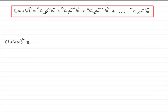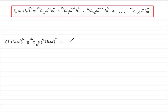What we've got is 6C0, a to the power n — a is 1, so that's 1 to the power 6 — and b to the power 0, b is kx, so put kx all to the power 0. Make sure you write these terms in brackets, especially the kx. That's the first term. Then for the second term, we have 6C1, reduce the power of a by 1, so that's 1 to the power 5, and increase the power of b by 1, so we get kx to the power 1.